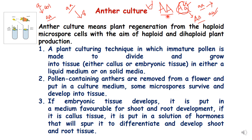For example, if we have a diploid plant, by anther culture we can make haploid plants, and then these haploid plants can be further made dihaploid by the application of colchicine treatment. This is a technique in which immature pollen is made to divide and grow into tissue, which can be either callus or embryonic tissue, in either a liquid medium or a solid medium.